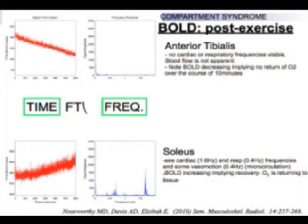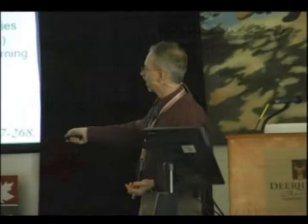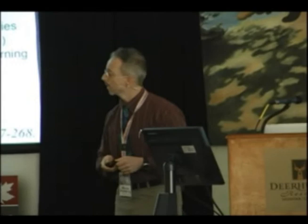Now here's something the engineers will love — a Fourier transform. We can take this BOLD signal and do a Fourier transform, and see frequencies representing physiologic things like heart rate or respiratory rate, which we see in healthy muscle. In the case of compartment syndrome, the muscle strangulates itself when exercising. When you do a Fourier transform on that BOLD signal, the physiologic signals are gone because the muscle is actually strangulating itself. We did a lot of work on this and found it very exciting.